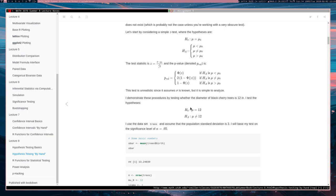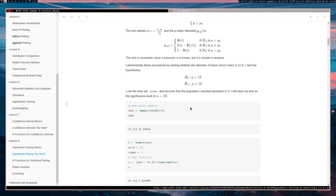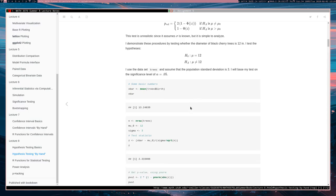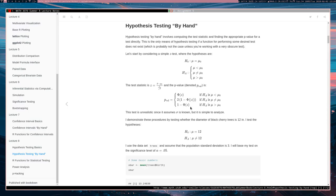So let's demonstrate by testing whether the diameter of black cherry trees is 12 inches. I test the hypotheses, H naught, which says that the true mean diameter is 12 inches, and the alternative says that the true mean is not equal to 12 inches. I have decided a priori that I want a significance level of alpha equals 0.05, and I'm going to assume that the population standard deviation is 3.